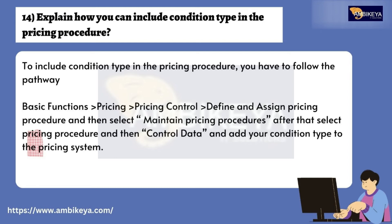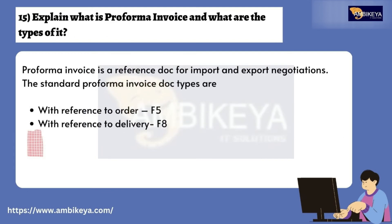Question number fourteen: Explain how you can include a condition type in the pricing procedure. To include a condition type in the pricing procedure, follow: Basic Functions > Pricing > Pricing Control > Define and Assign Pricing Procedure, then select Maintain Pricing Procedures, then select the pricing procedure and Control Data, and add your condition type to the pricing system.